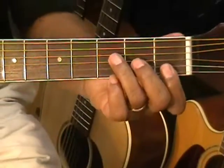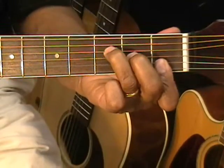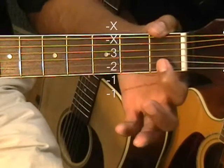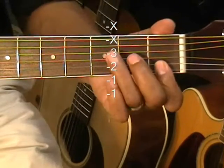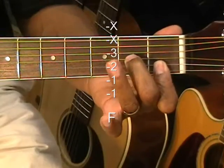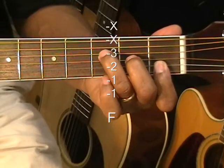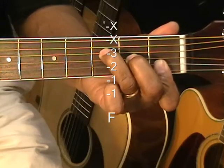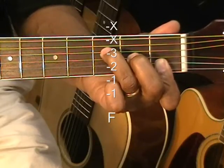Our next chord is a textbook F. First fret, we're holding down the B string and the high E string. Bring in the middle finger to the G string, the 2nd fret. And your ring finger to the D string, 3rd fret. That's our F chord. F major.